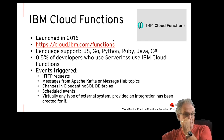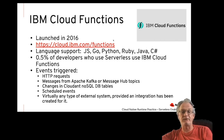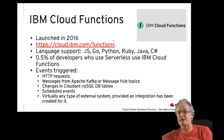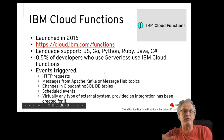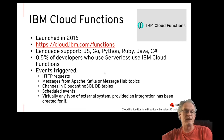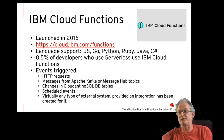IBM Cloud Functions launched in 2016, providing a broad set of language support including Ruby. It has very little usage according to the serverless community — around 0.05% of developers. Based on Apache OpenWhisk, it is container-based and can run on-premises. It has the most limited set of triggers compared to AWS and Azure.